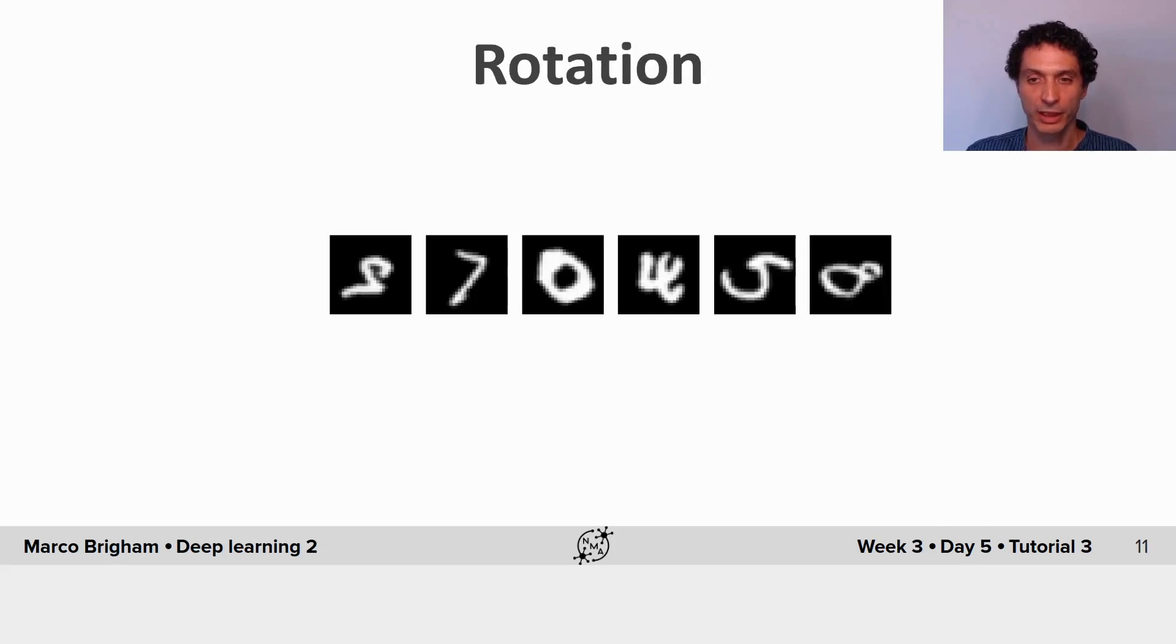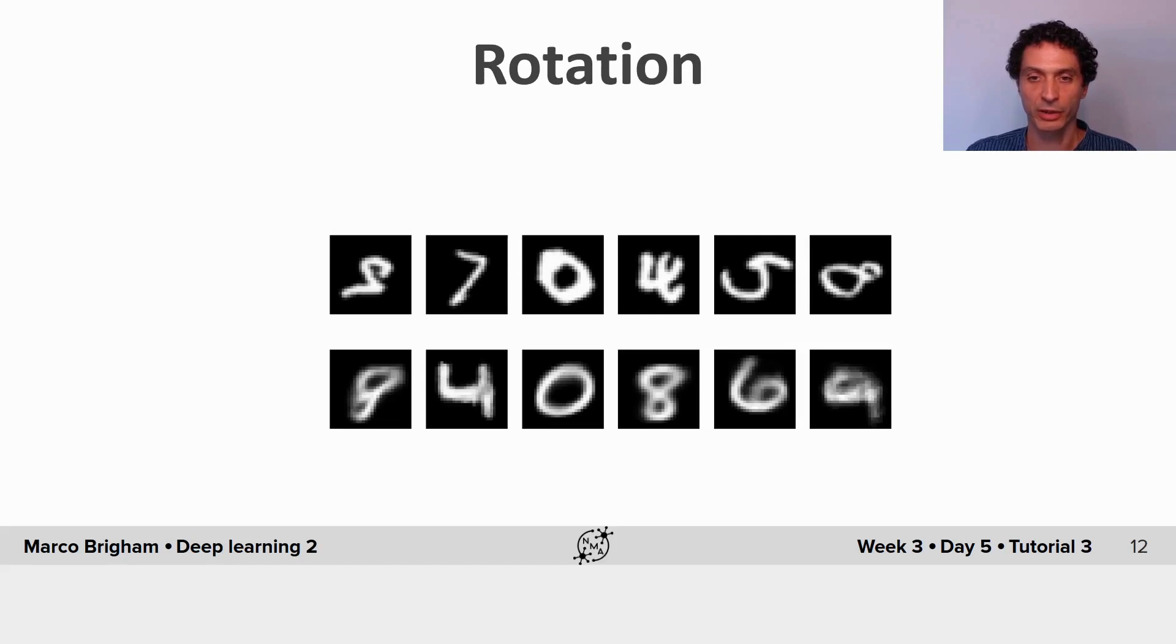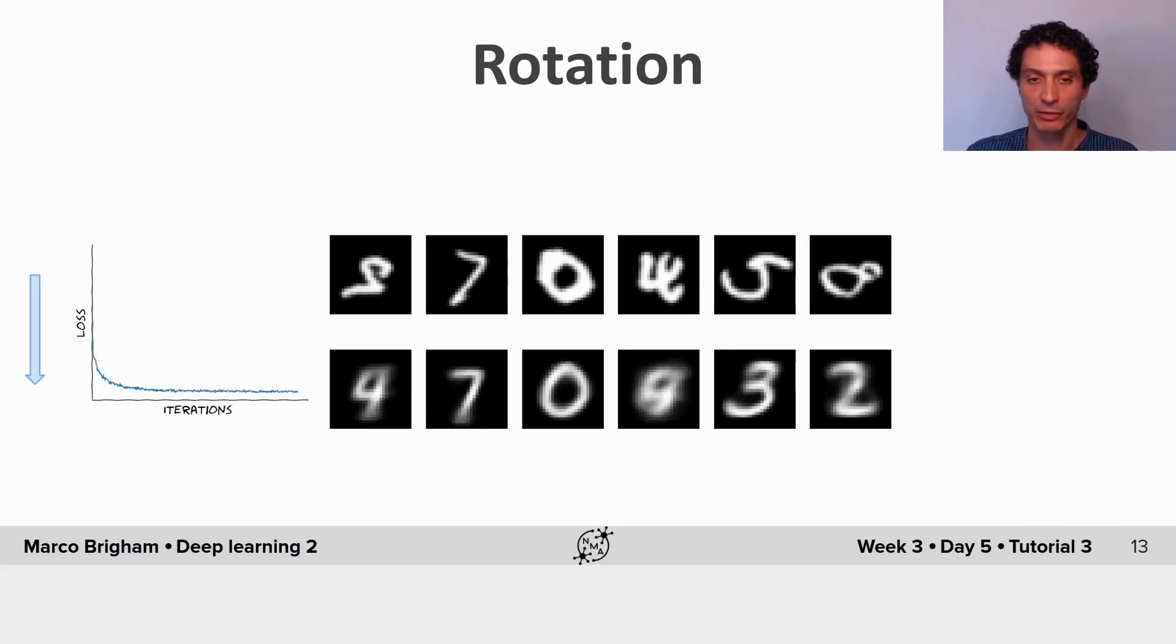Fourth task is the rotated images, and this is how the autoencoder perceives it without training. And we see that this is a bit hard. But after training, we see that some digits really start improving. And if we had trained it longer, this would probably get even better with training.